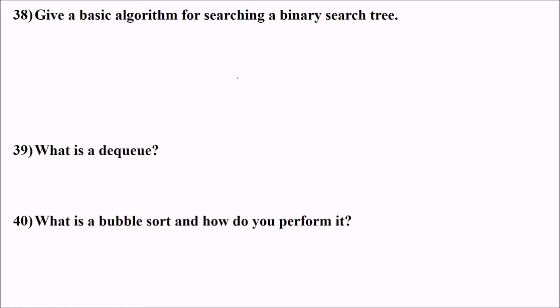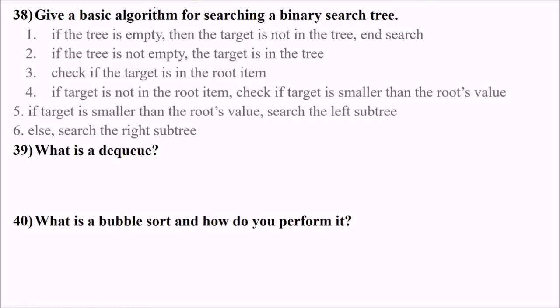38 is what is the basic algorithm for searching a binary search tree? First we find if the tree is empty or not. If the target is not there, we end the search. If the tree is not empty, the target is in the tree. We check for the root. If the target is not in the root, we see if the target is smaller or larger than the root value. If it is smaller, we go to the left. Otherwise, we go to the right.